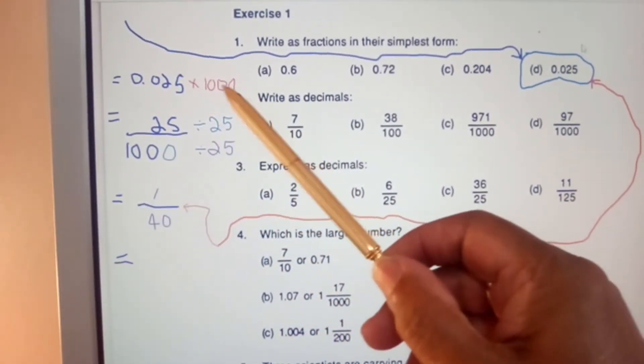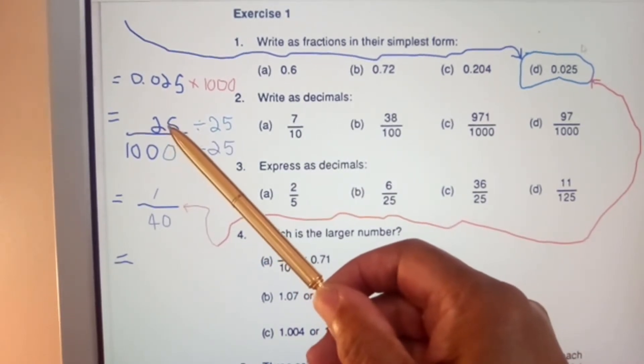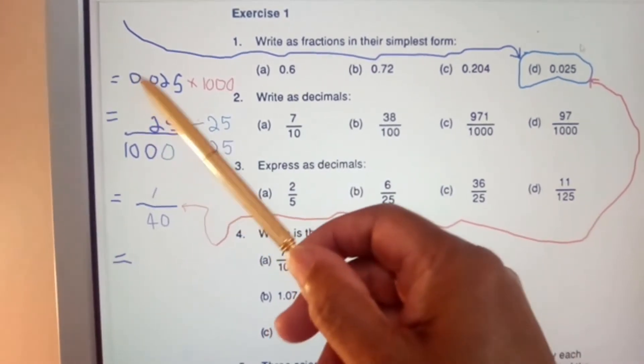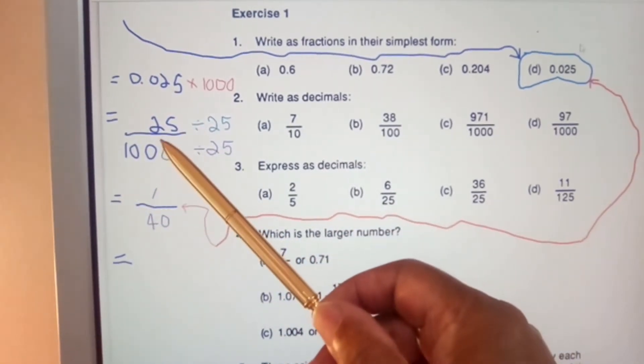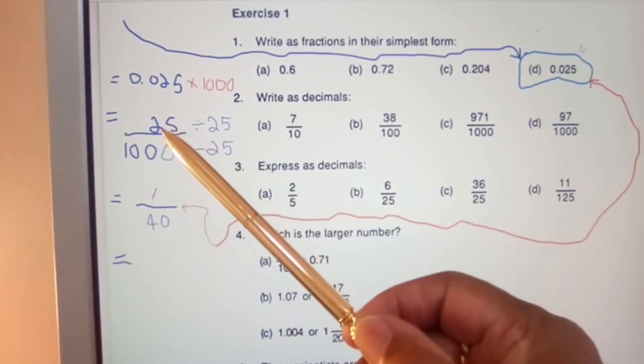...is times it by a thousand. This brings it to 25 over a thousand, because remember we got one, two, three decimal places to move, which makes it 25. Now it's similar to what I said earlier.